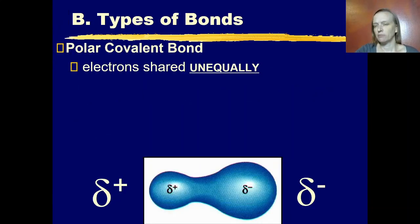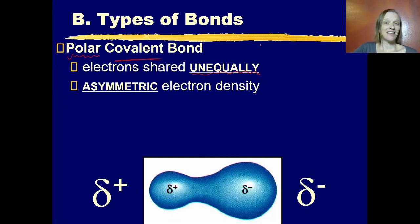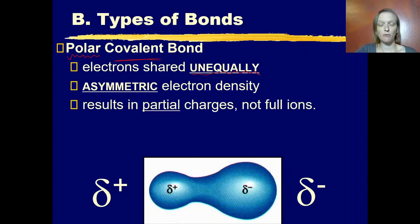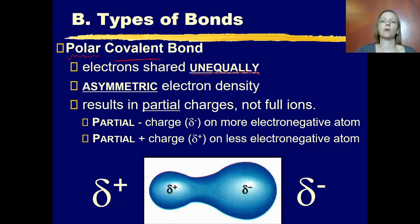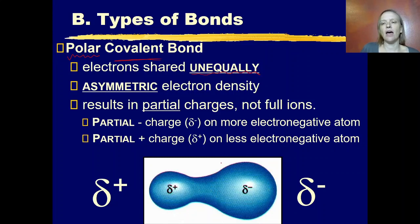In a polar covalent bond, electrons are shared, but because it's polar, they are shared unequally — there's asymmetric electron density. There are more electrons on one side than the other; it's like an unequal tug of war for electrons. This results in partial charges, not full charges of +1 or -1, but partial charges. We represent those with the lowercase Greek letter delta — partial positive charge on one end, partial negative charge on the other end, where there are more electrons.